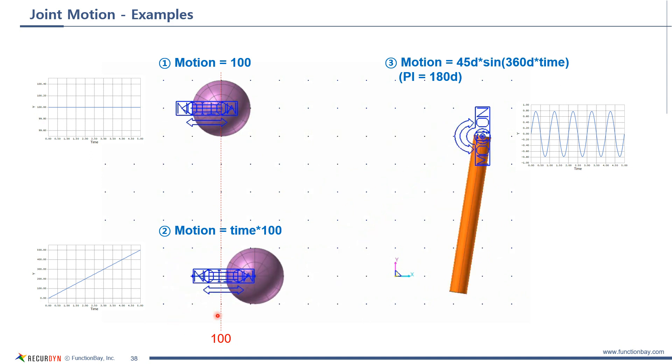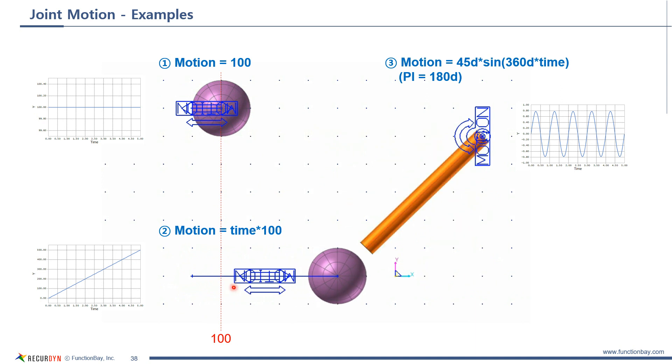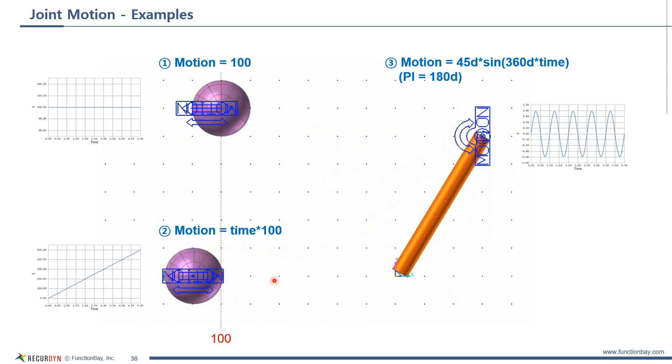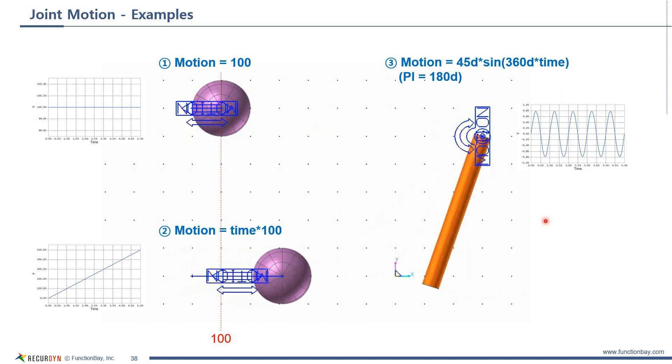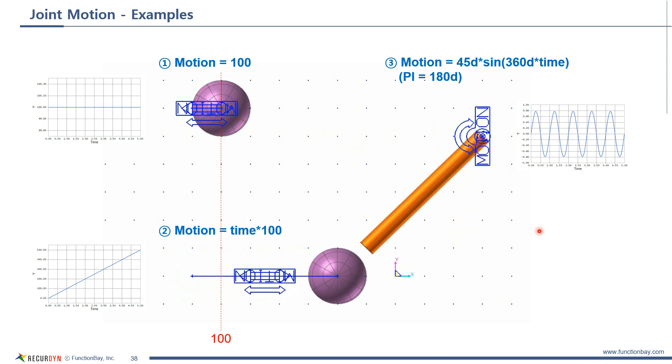Second one is using time multiplied by 100. So, this value changes over time. At one second, it is 100. At two seconds, it is 200. Third one is a little complex. It uses sine function. So, the cylinder is rotated from minus 45 degrees to 45 degrees.